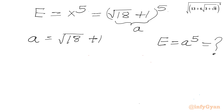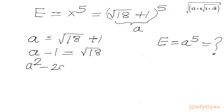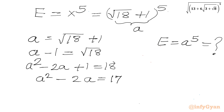Take away 1 from both sides: a minus 1 equals √18. Now squaring both sides gives a² minus 2a plus 1 equals 18. Taking away 1 from both sides: a² minus 2a equals 17, so a² equals 17 plus 2a.